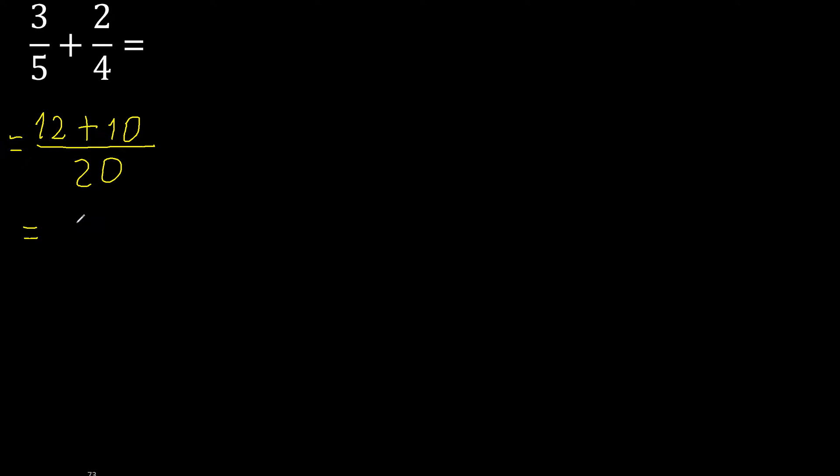22, 20 can be simplified because it can be divided by 2. 22 divided by 2 is 11, 20 divided by 2 is 10.